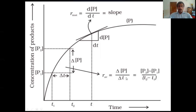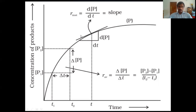To calculate instantaneous rate — the rate of the reaction at a particular moment — consider time t. To find the rate at this moment, draw a tangent on this curve and measure the slope of the tangent. That gives you the instantaneous rate, represented as d[P] divided by dt, which is the slope of the curve.